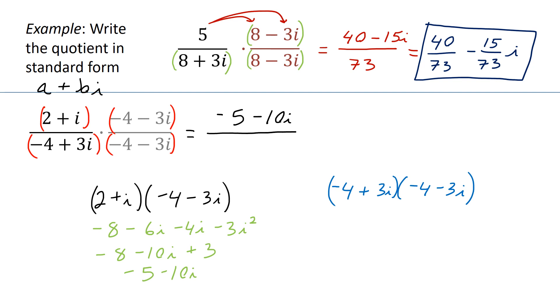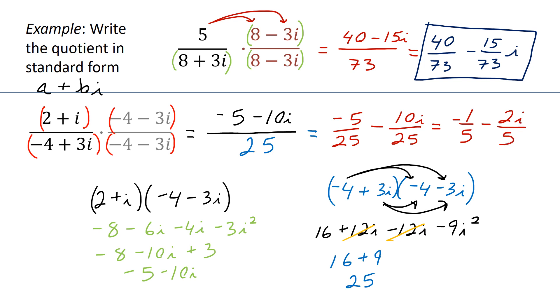Because these are complex conjugates, we expect our answer of this part to have no imaginary part. So go ahead and distribute, simplify. We get 25. And lastly, we will write this as a complex number in standard form: so negative 5 over 25 minus 10i over 25. And we can simplify this, so it's negative 1/5 minus 2i/5. And there's our answer.